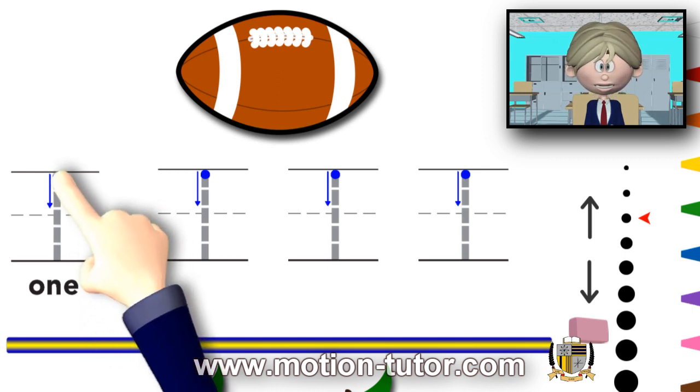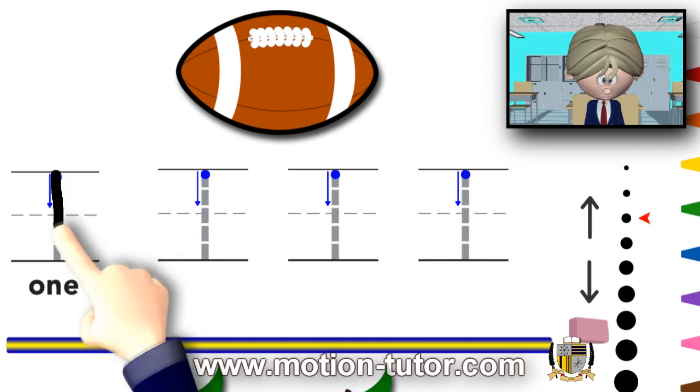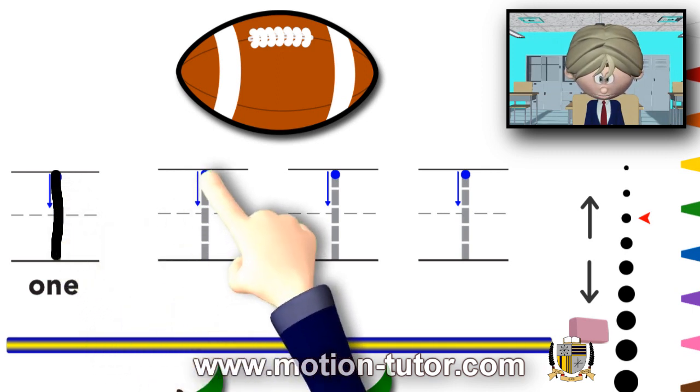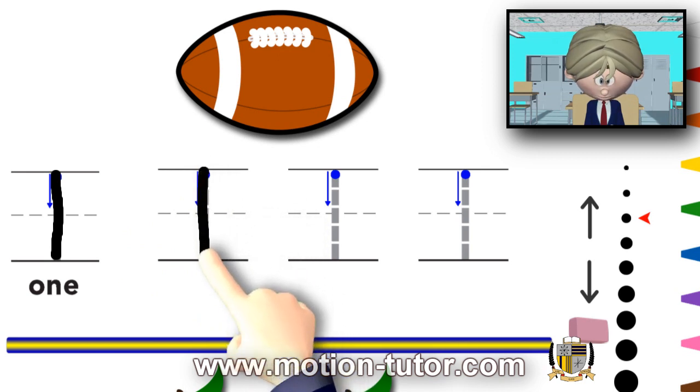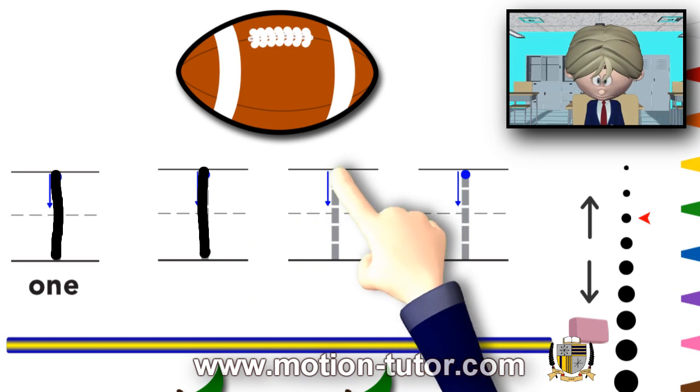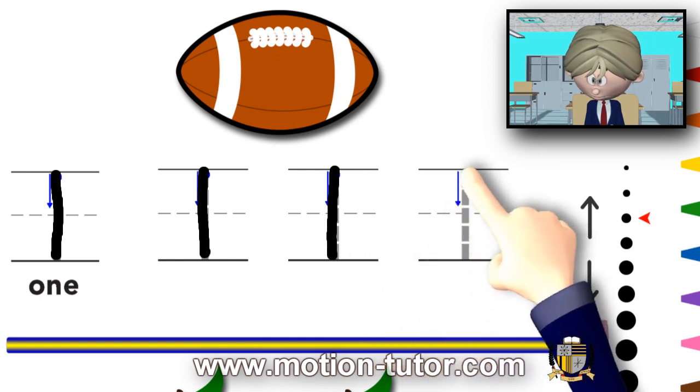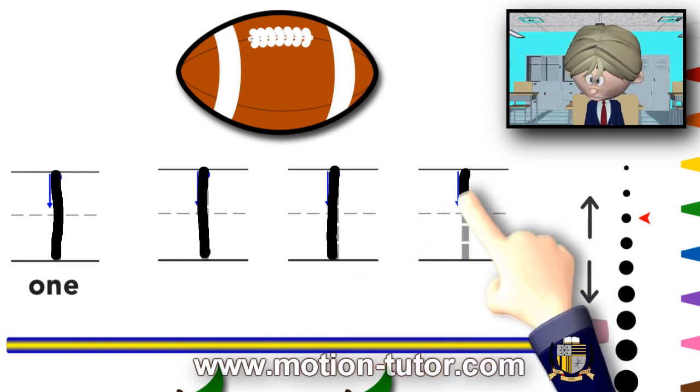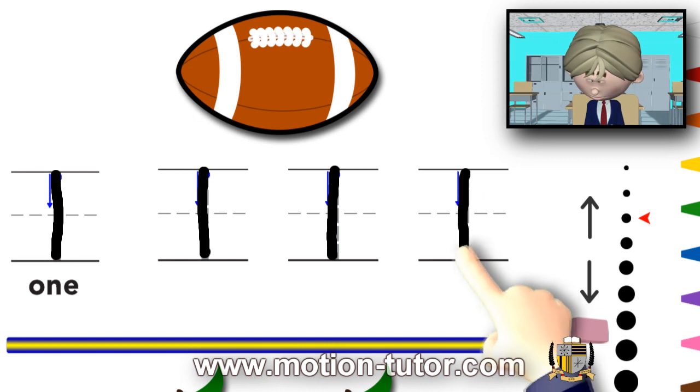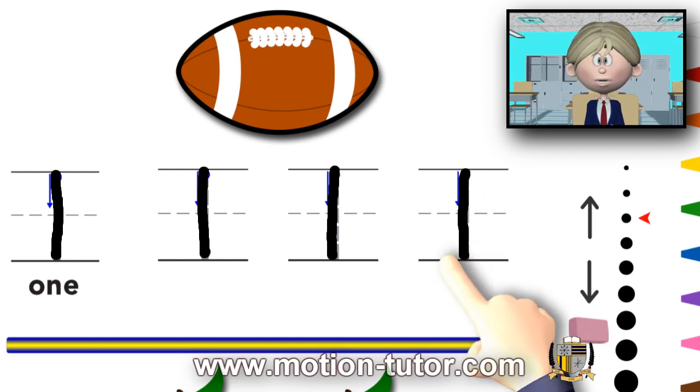Ready? We start from up here and go down. Let's try it again. From up here and go down. And we'll do it again. Go down. And then one more time. From up here and we go down. And that's how you write the number 1.